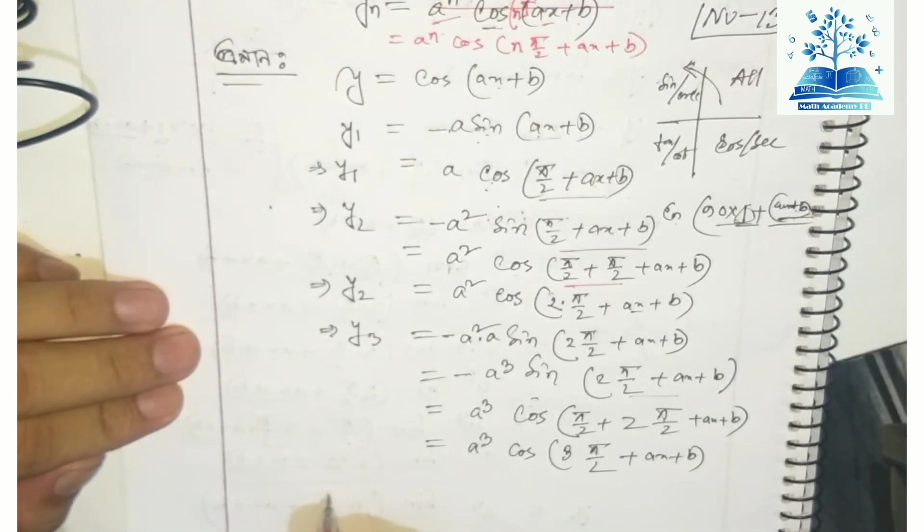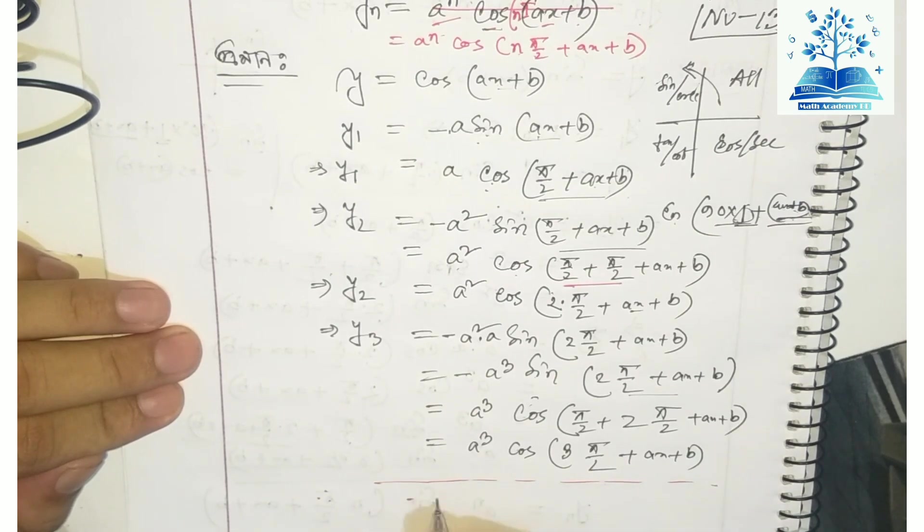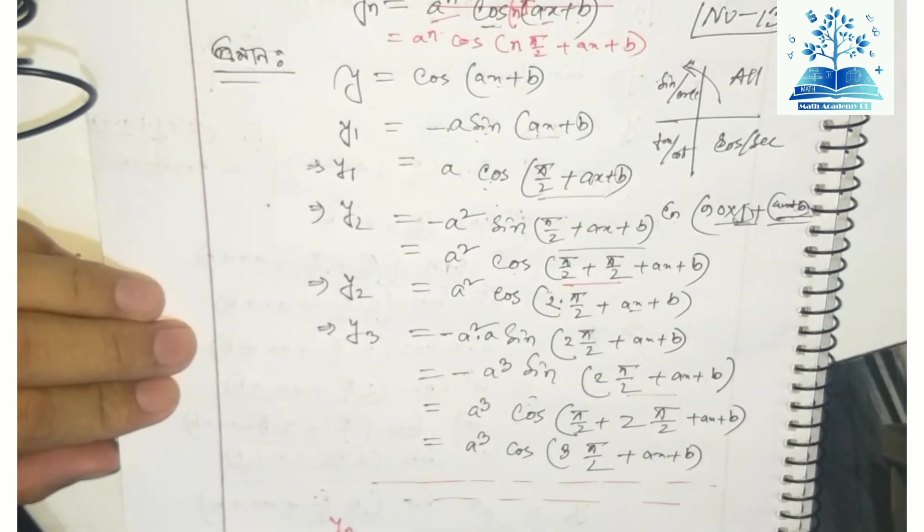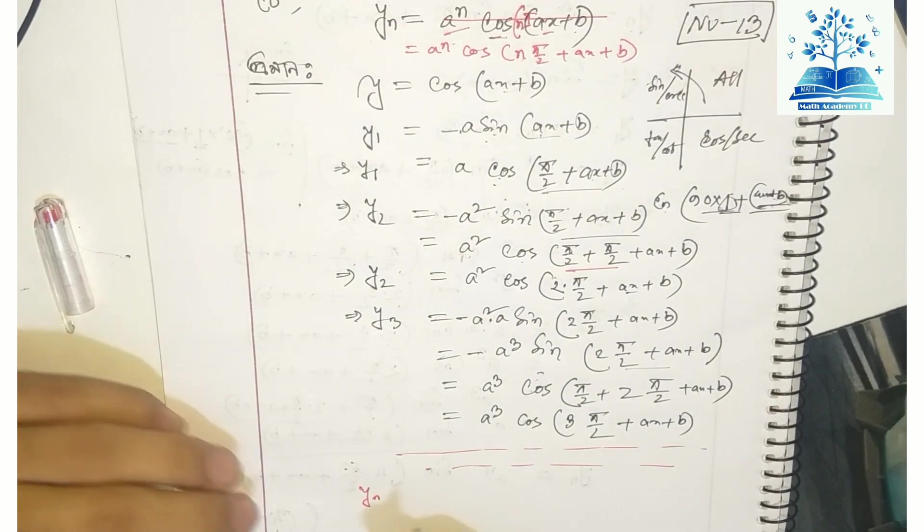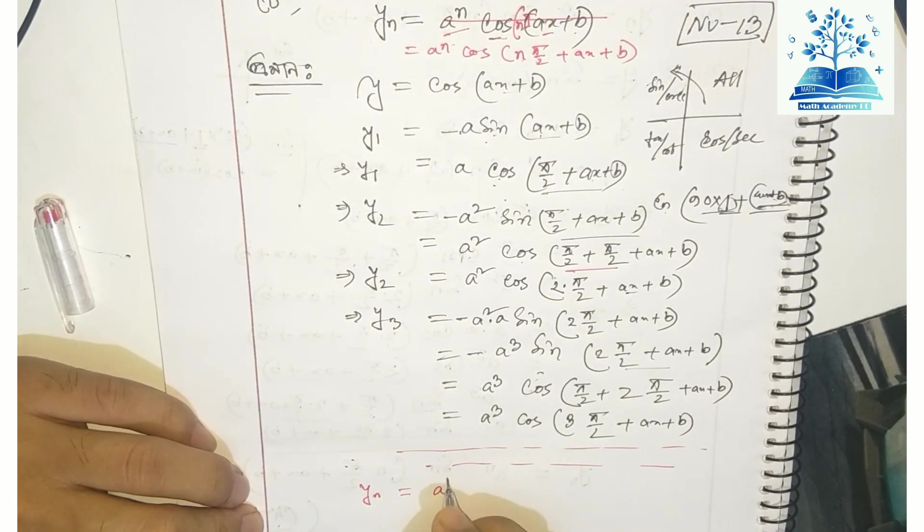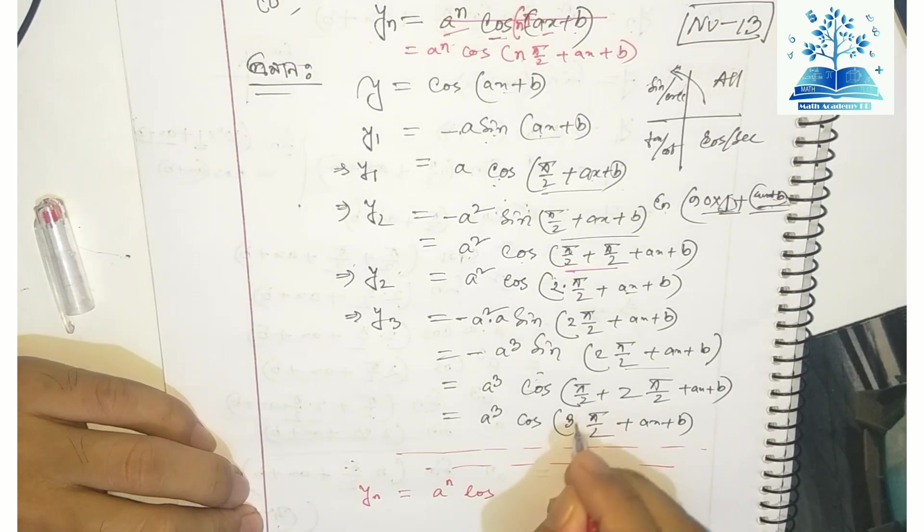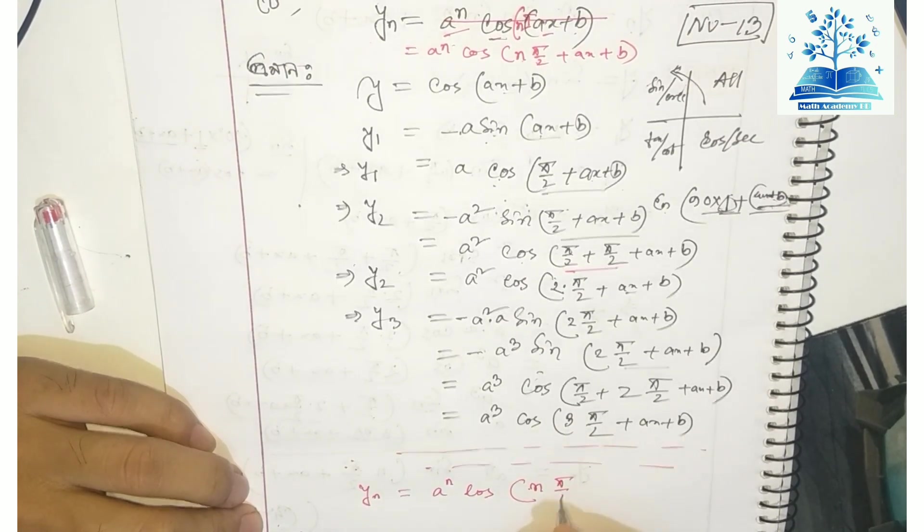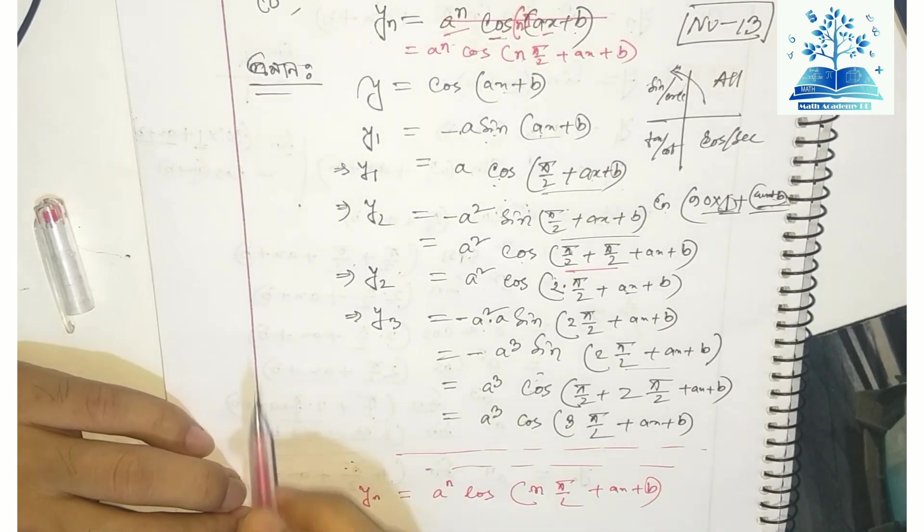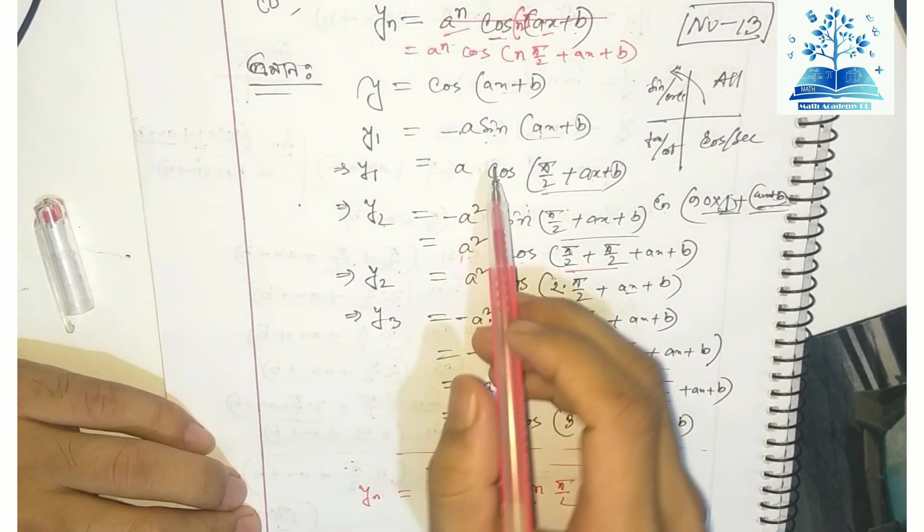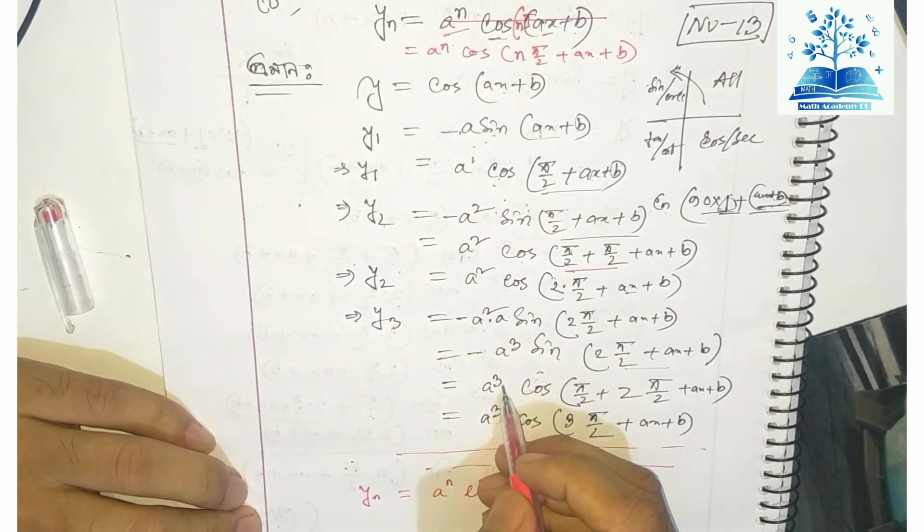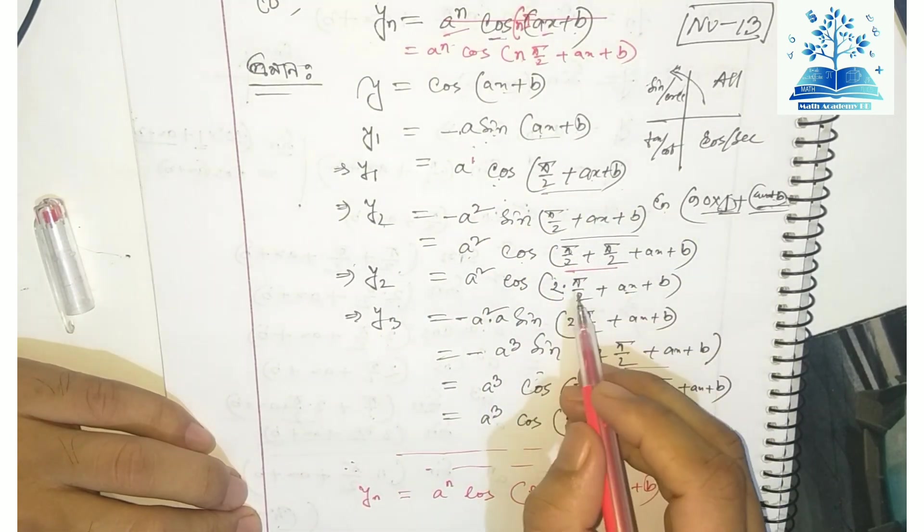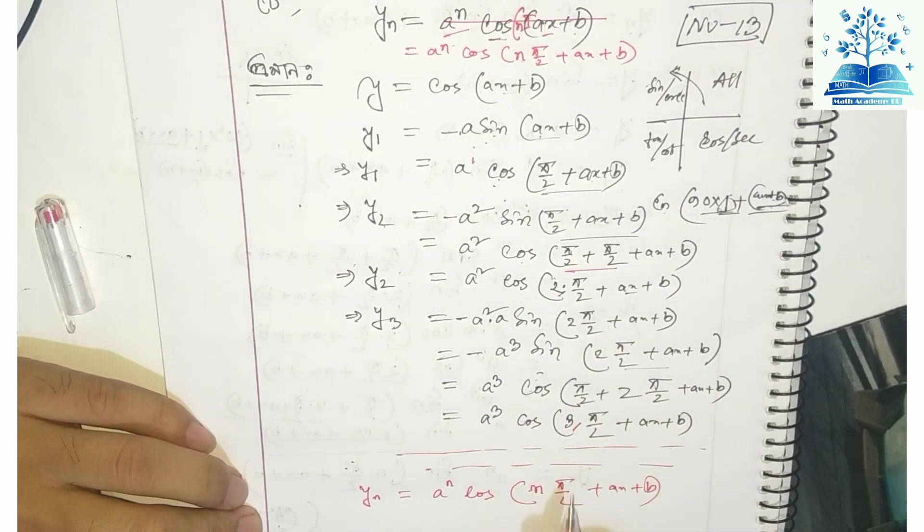In conclusion, yₙ equals aⁿ cos(n·π/2 + x + b). For y₁, y₂, y₃, the pattern holds with powers a¹, a², a³.